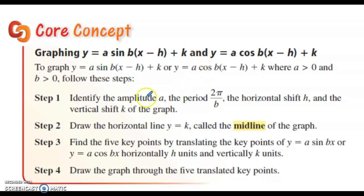So step one, identify the amplitude. The amplitude is the letter in front of the function. The period, 2π divided by B. So when you know B, the number that is after the function but before the X, it's like the coefficient of X. The horizontal shift H is what's going to move left and right. And the vertical shift, K, is going to move it up and down.